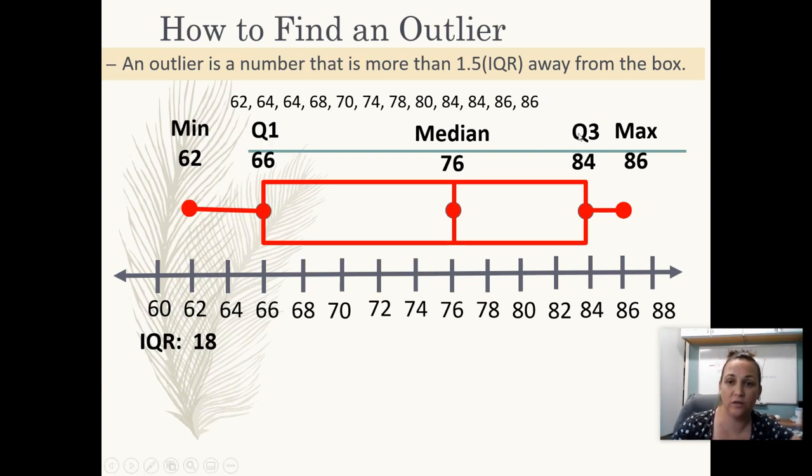After you have found your quartiles, then you're going to find your interquartile range. We already found that in the first video. It was 84 minus 66, so it was 18. According to our formula, we need to take our interquartile range and times it by 1.5. So 1.5 times 18 is 27.